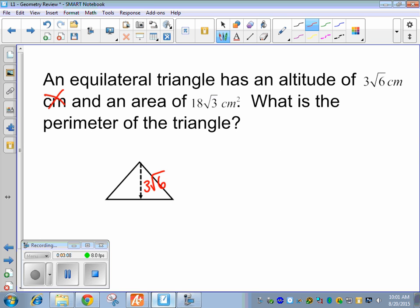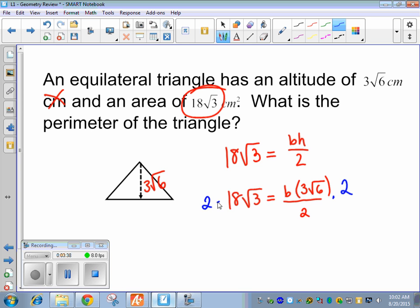So they give us the area, which is helpful. We do know the formula for the area of a triangle, so we can say that 18 root 3, the area, is equal to base times height divided by 2. And we also can plug in the height. So we need to simplify this. I like to get rid of this fraction here first. So multiply both sides by 2. And when you multiply with radicals, only multiply these two numbers. So that's 36 root 3.